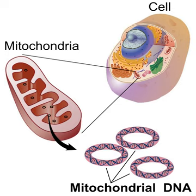In the cells of extant organisms, the vast majority of the proteins present in the mitochondria — numbering approximately 1,500 different types in mammals — are coded for by nuclear DNA, but the genes for some, if not most, of them are thought to have originally been of bacterial origin, having since been transferred to the eukaryotic nucleus during evolution. The reasons why mitochondria have retained some genes are debated. The existence in some species of mitochondrion-derived organelles lacking a genome suggests that complete gene loss is possible, and transferring mitochondrial genes to the nucleus has several advantages.